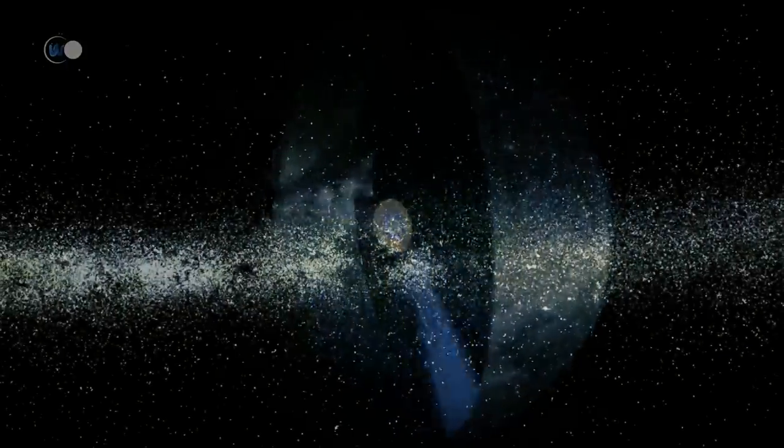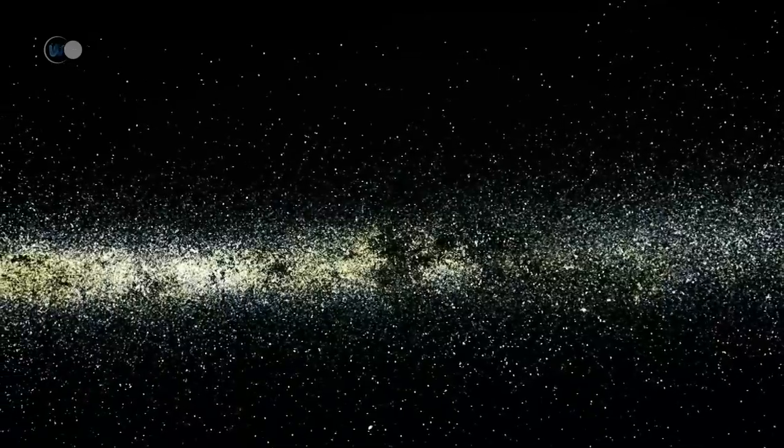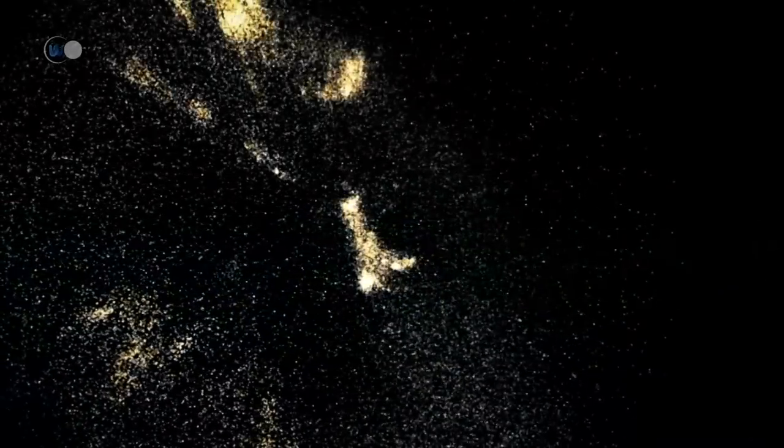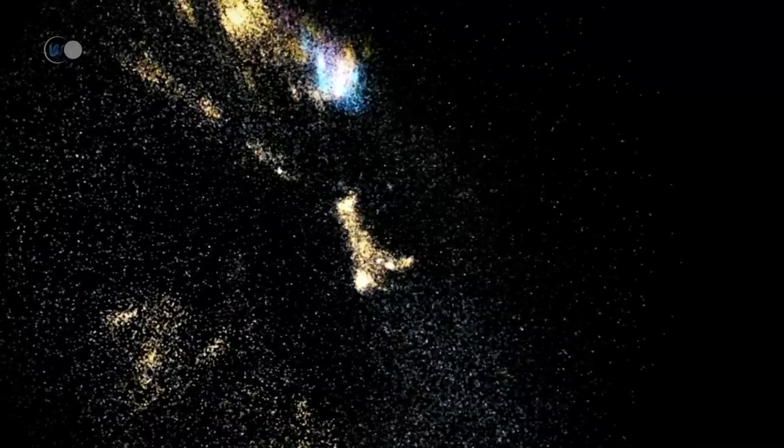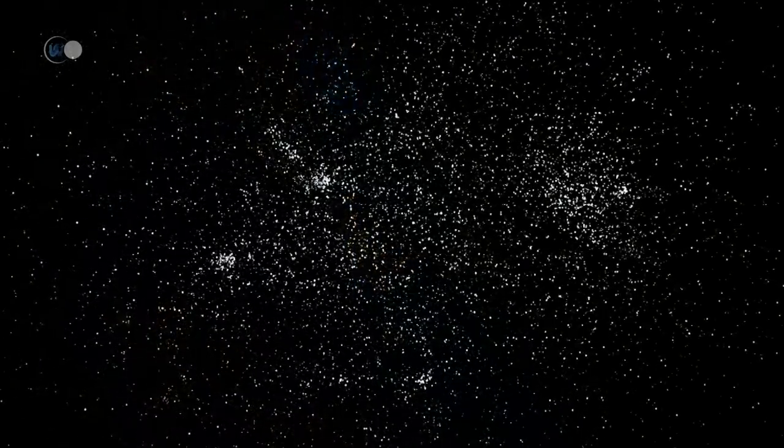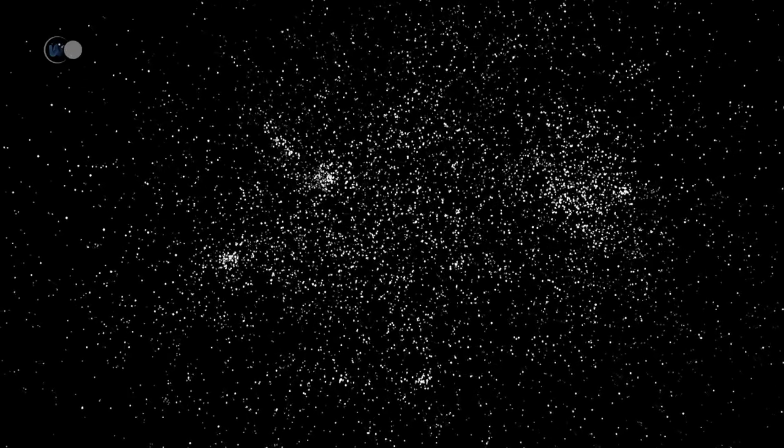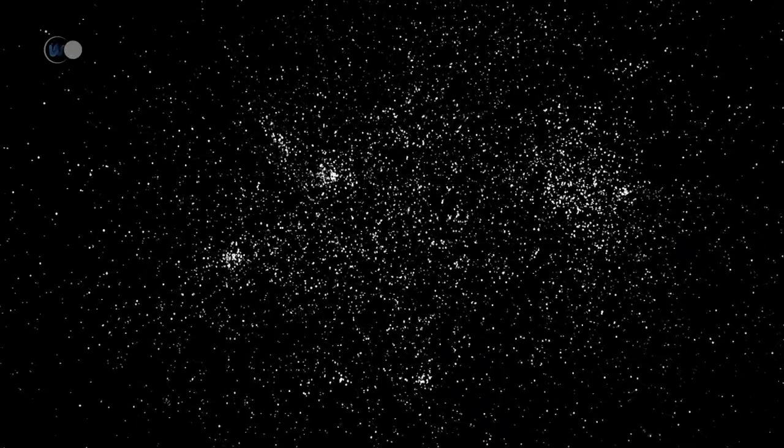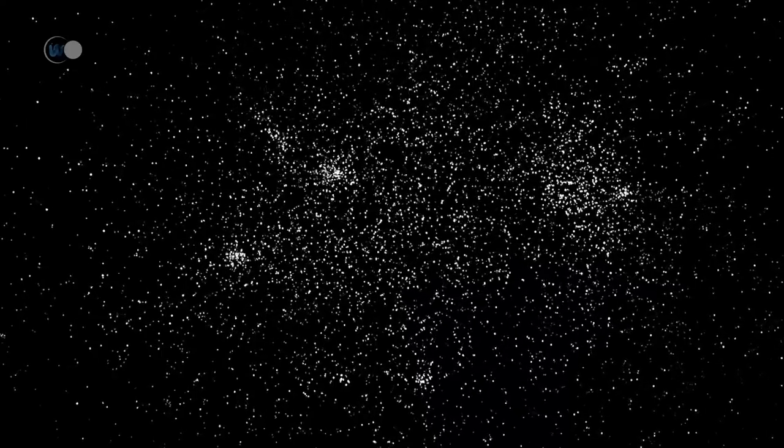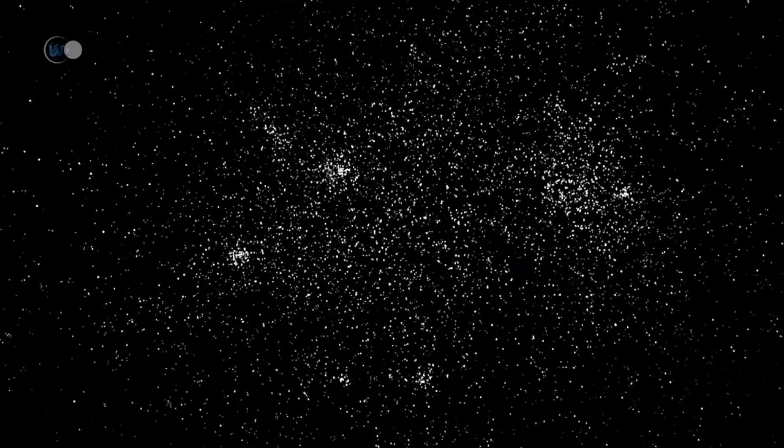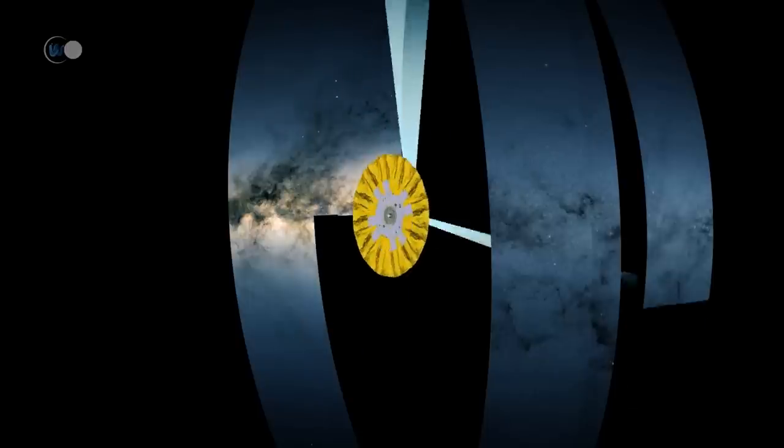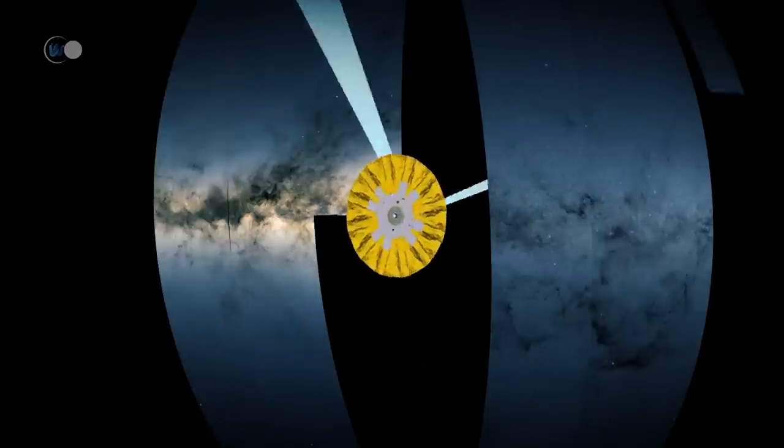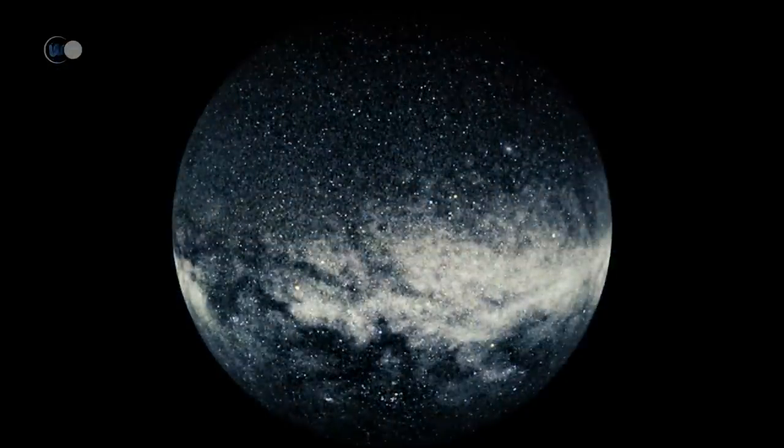It has photographed the sky continuously, in three dimensions. It was able to measure the position, distance, and movement of a billion stars. Billions of data were collected, before being processed by a team led by CNRS researchers. They then achieved an unprecedented feat, by creating the first map of our galactic neighborhood.